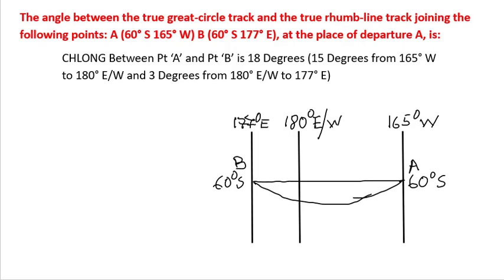Now let us understand the question. The question is saying what is the angle between the true great circle track and the true rhumb line track joining points A and B. We have the rhumb line track which is going straight, this is the rhumb line track, and this is the great circle track. What is this angle at point A is what we have to find out.